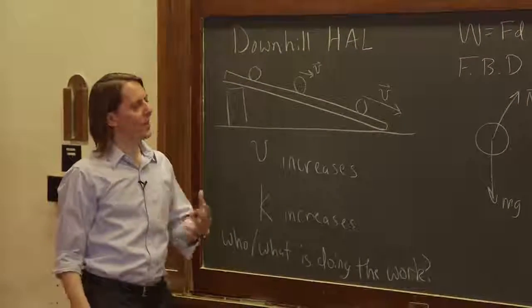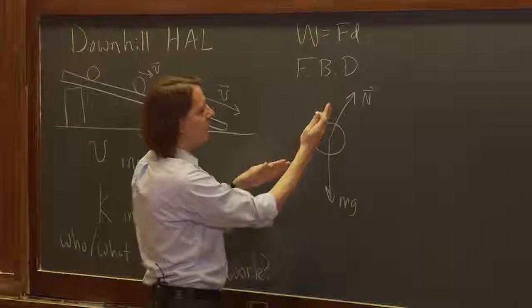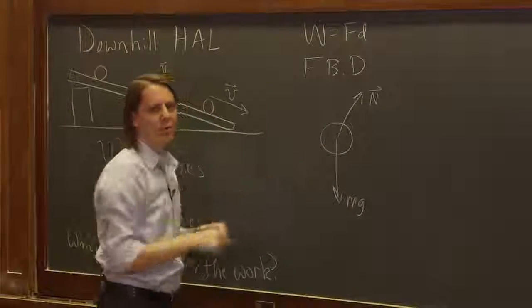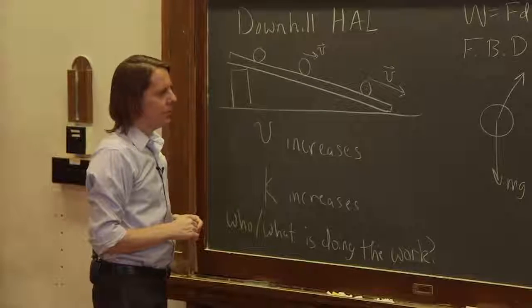And if you really want to know exactly what's going to happen, then you do the vector sum of these two. Their components along the track cancel. That's why it doesn't fall into the track. And they have a component down the track. And that's what accelerates the ball based on the value of that angle. So that we all did before.